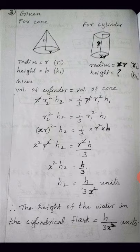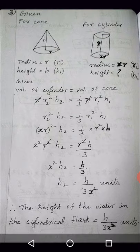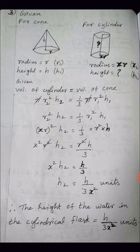Now replace the given values. For the cylinder, radius r2 = xr, so (xr)² = x²r². For the cone, radius is r and height is h. So: x²r²·h2 = r²·h / 3. Since r² is common on both sides, cancel it, leaving x²·h2 = h/3.